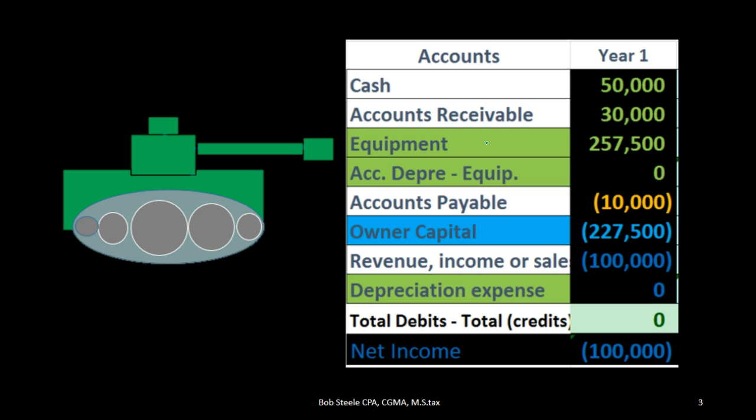We're going to use this to help generate revenue in the future, therefore we're putting it on the books as an asset. By contrast, if we purchased something like small tools that we consume near the point of purchase, we would expense it. That's in accordance with the matching principle.